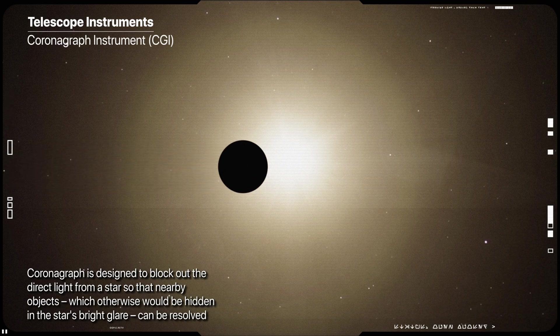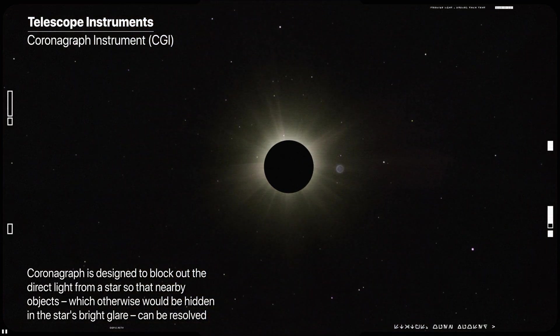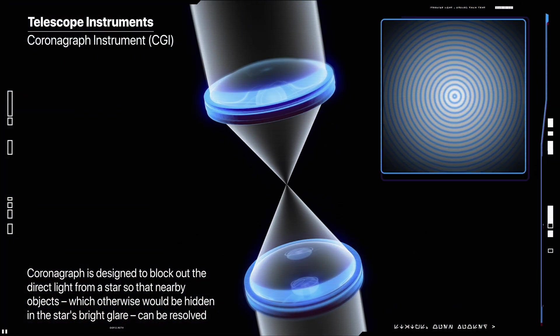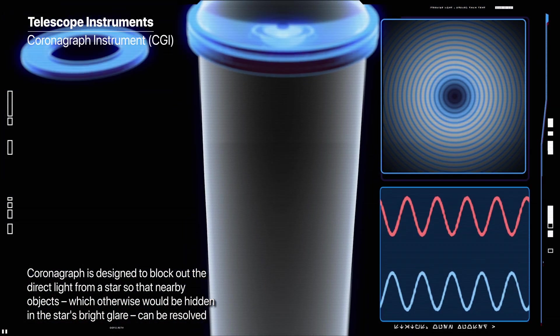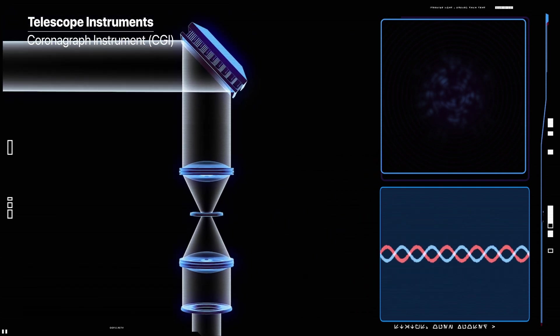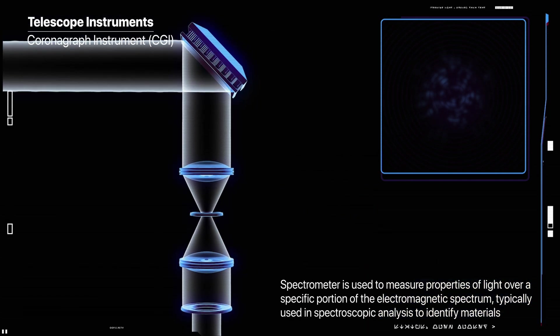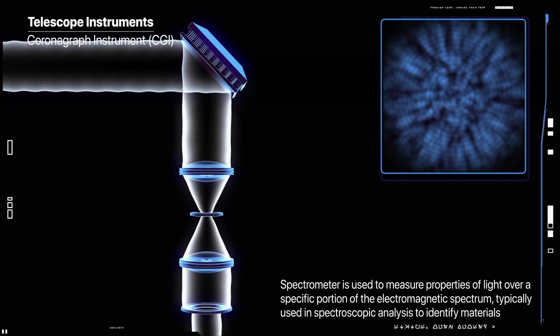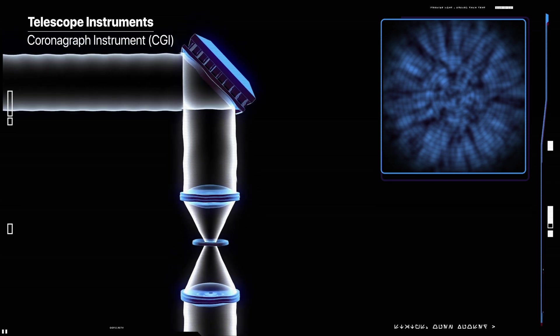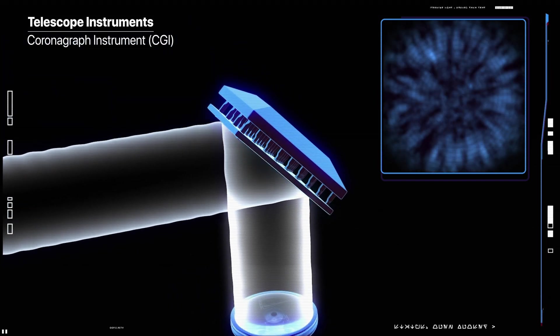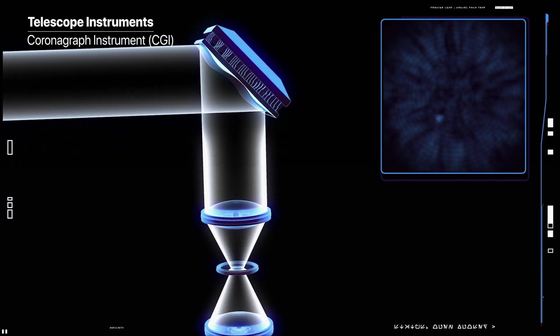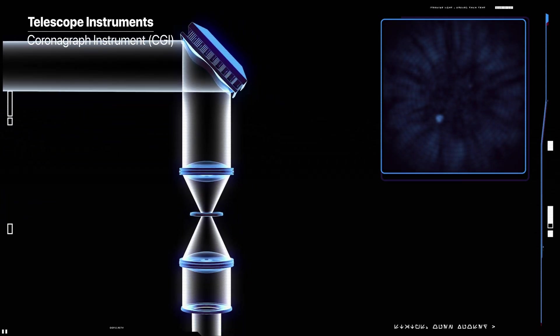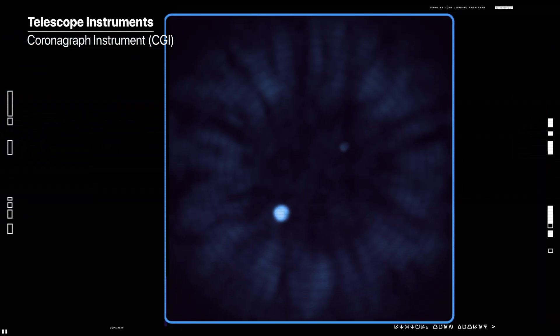The coronagraphic instrument CGI is a high-contrast small field of view camera and spectrometer covering visible and near-infrared wavelengths using novel starlight suppression technology. Astronomers use spectrometers to analyze distant objects and determine what elements and compounds are present. And the coronagraph instrument demonstrates technology that allows astronomers to directly image planets in orbit around other stars, which otherwise would be hidden by greatly reducing the glare from the host star.